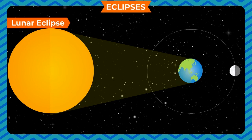Lunar eclipse — when the sun, the moon and the earth come along a straight line in such a way that the earth is between the sun and the moon, the light of the sun is blocked by the earth. This phenomenon is called a lunar eclipse. The shadow of the earth is formed on the moon and is visible from the earth. When a lunar eclipse occurs, the moon appears red in colour.